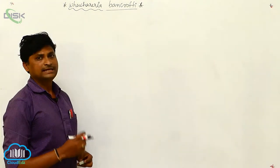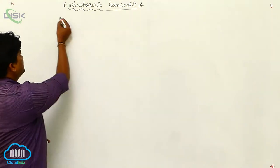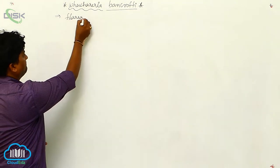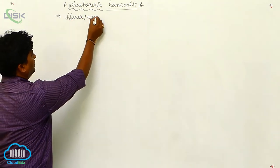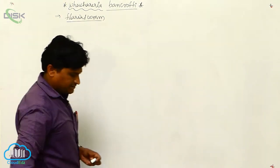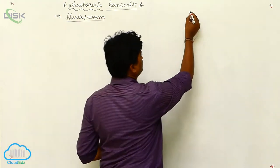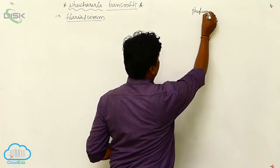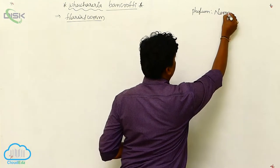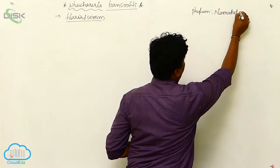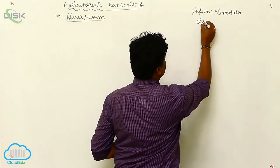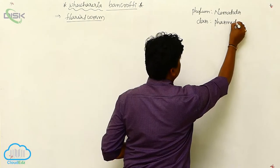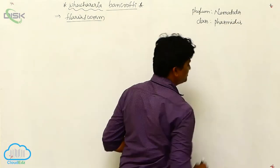Wuchereria bancrofti, normally we call as filarial worm. We are going to discuss about the classification. It goes to phylum Nematoda, and the class Phasmidia. We already know about Phasmidia and Aphasmidia.